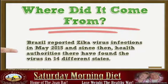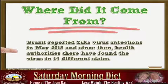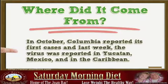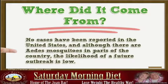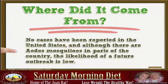Brazil reported Zika virus infections in May 2015 and since then, health authorities there have found the virus in 14 different states. In October, Colombia reported its first cases and last week the virus was reported in Yucatan, Mexico, and in the Caribbean. No cases have been reported in the United States, and although there are Aedes mosquitoes in parts of the country, the likelihood of a future outbreak is low.